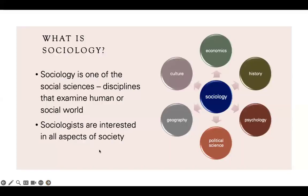Sociology is basically one of the social sciences. It's a discipline that examines human behavior, human society, or the social world. Sociologists are interested in everything that is interconnected with humans — that can be economics, where we go to work and get paid. There's also history: where we started, where we are going, how social change happened, and what factors affected human societies in the past.